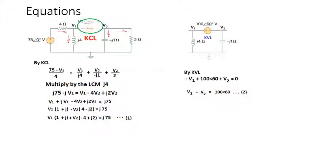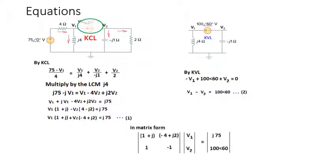From these two equations you can solve either by substitution — finding v1 from one equation and substituting — but the easiest way is to use a matrix. So we write the matrix equation with the coefficients of v1 and v2, and the outputs are j75 and 100∠60°.